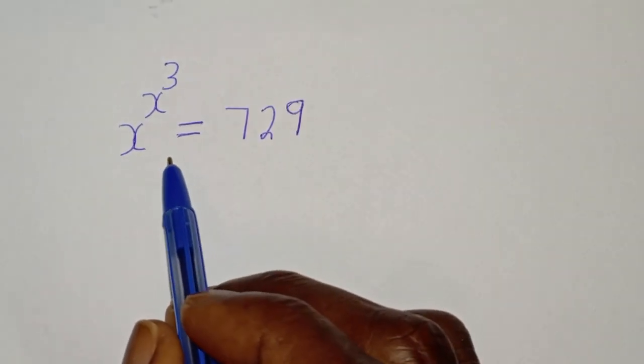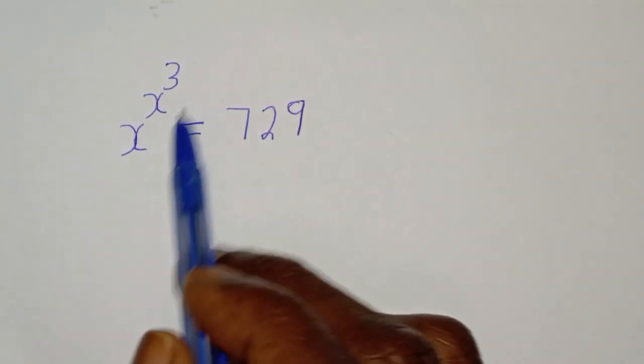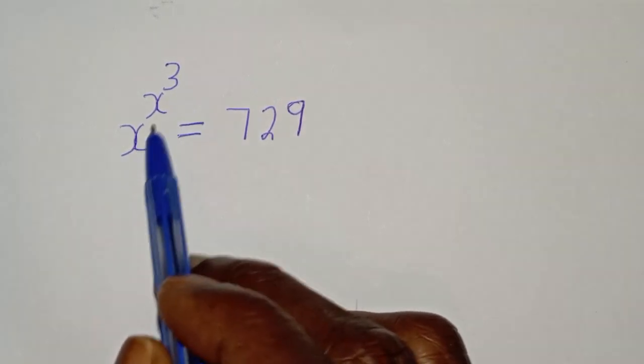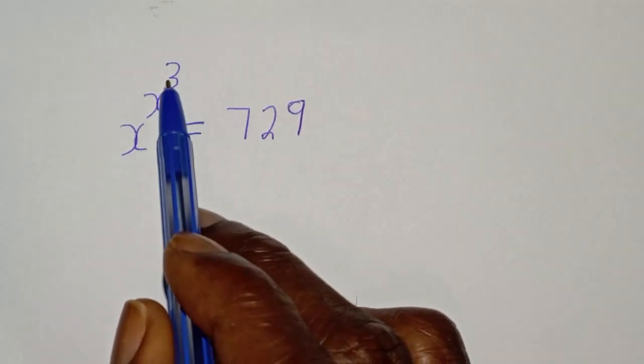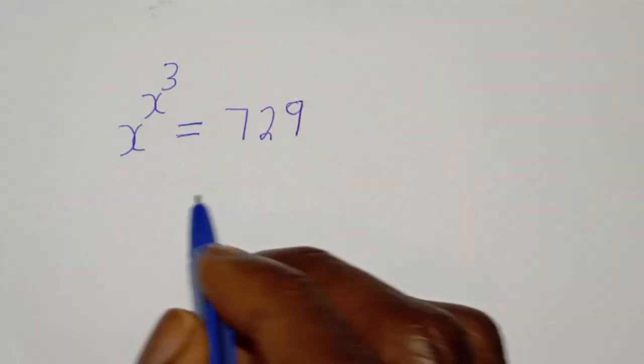Hello, welcome to Math Focus. How to solve for s from this given Math Olympiad problem: s raised to the power s raised to the power 3 is equal to 729.